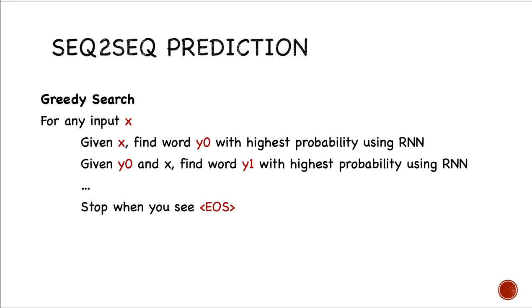Here is the sequence-to-sequence prediction. We use the greedy search mechanism. For any input x, given x, find the word y0 with highest probability using RNN.